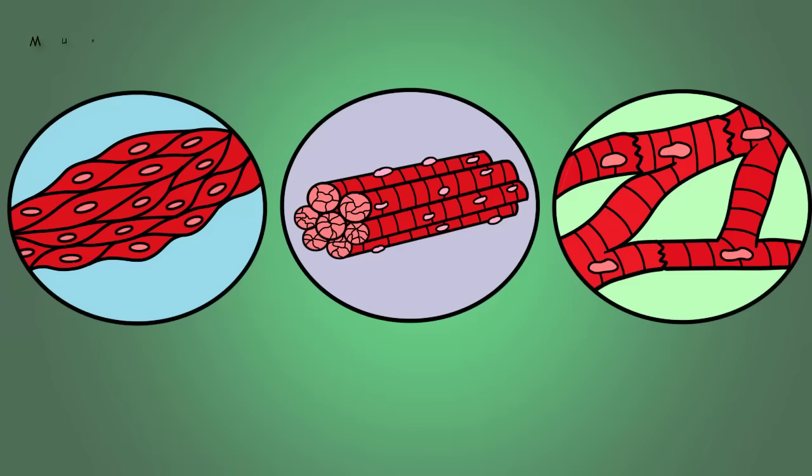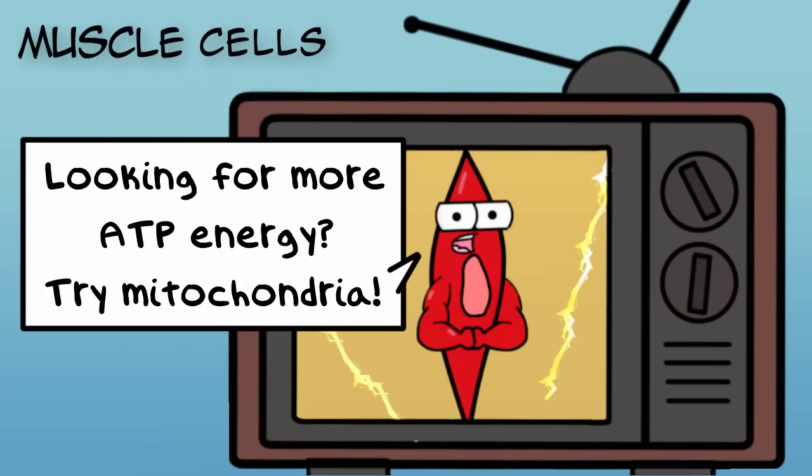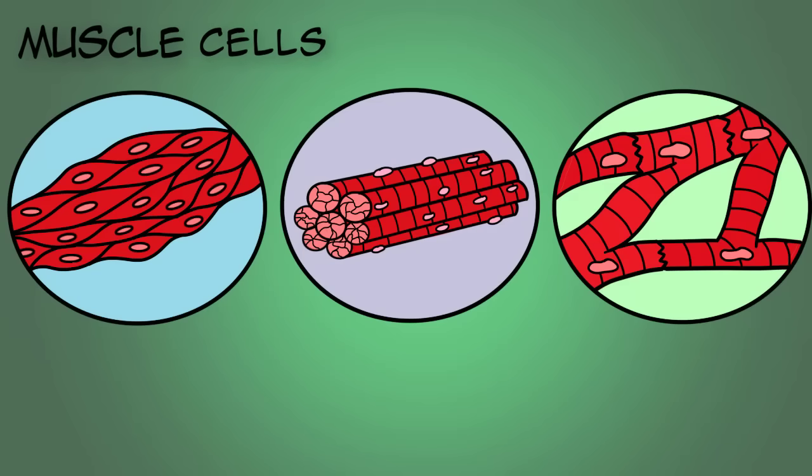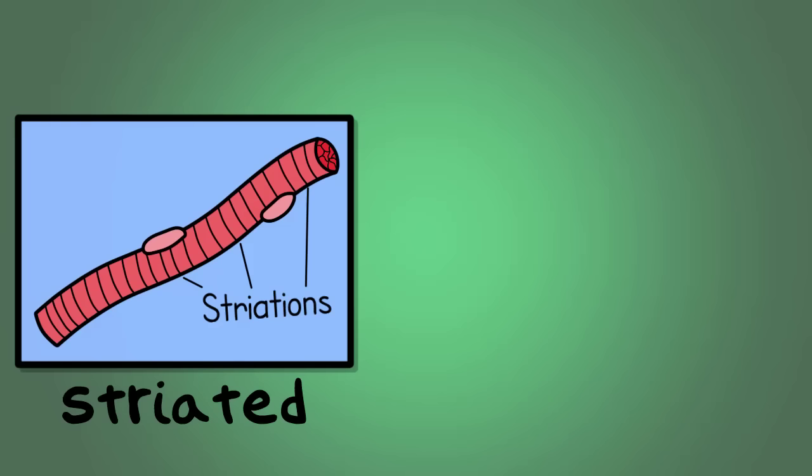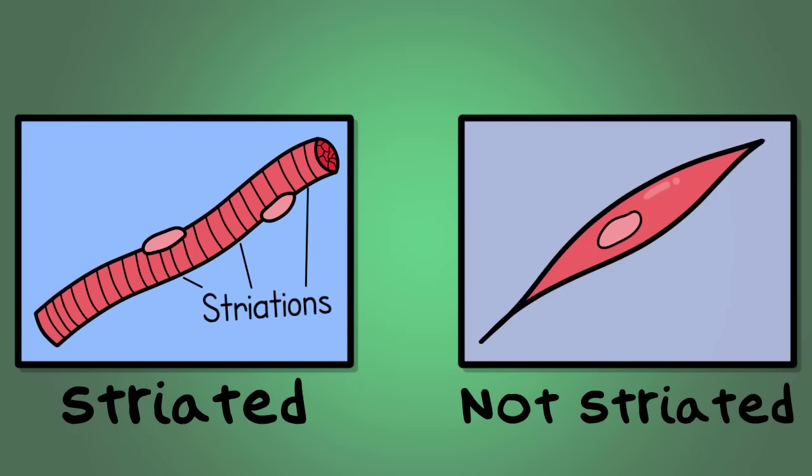How about muscle cells? Many muscle cells can have more mitochondria than many other body cell types because of their need for ATP energy. Depending on how their overlapping filaments are arranged, they can be considered striated, which basically means a striped appearance, or not striated.